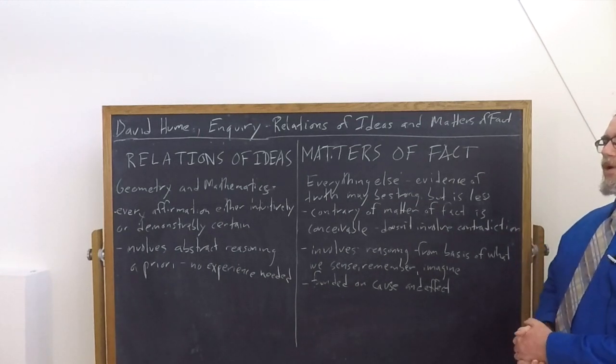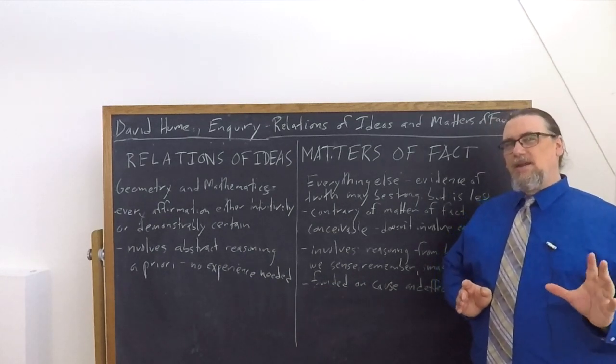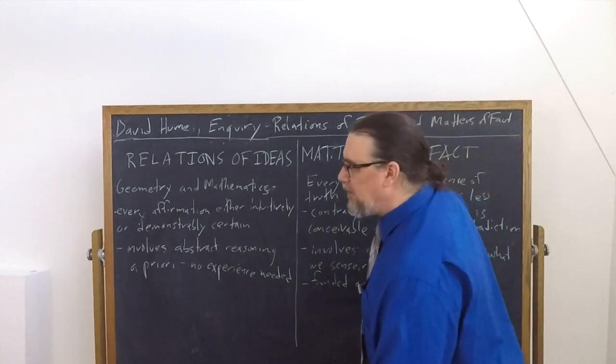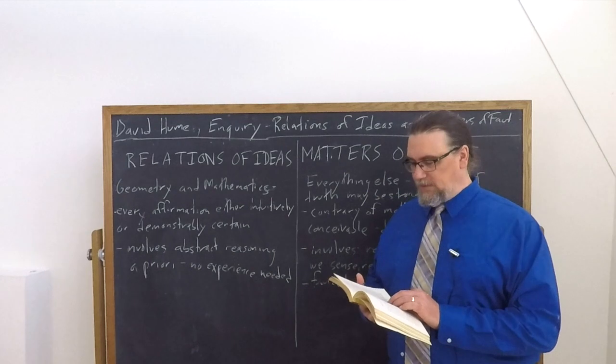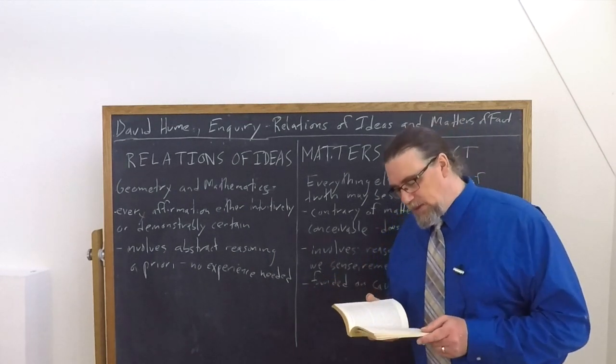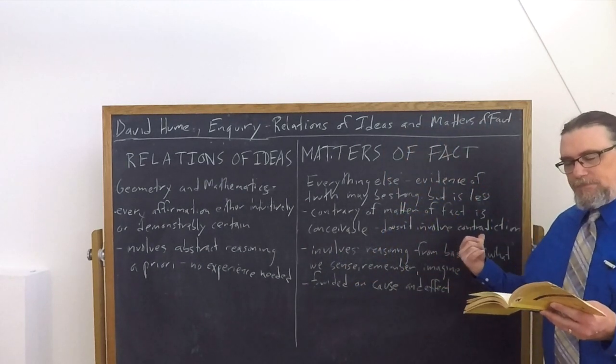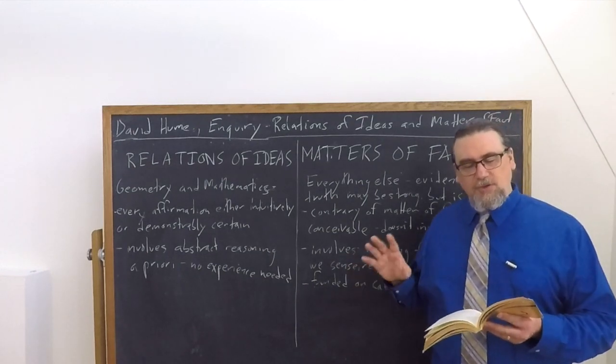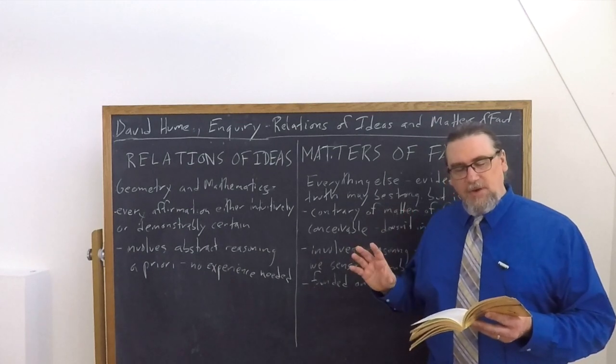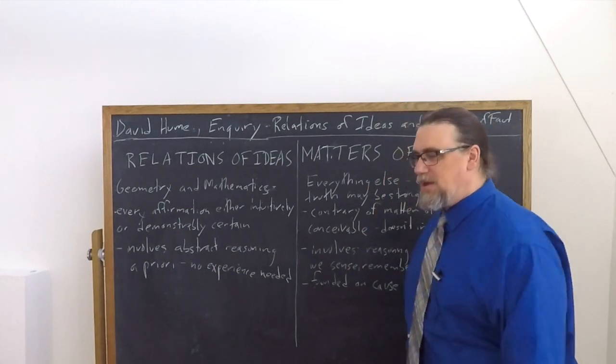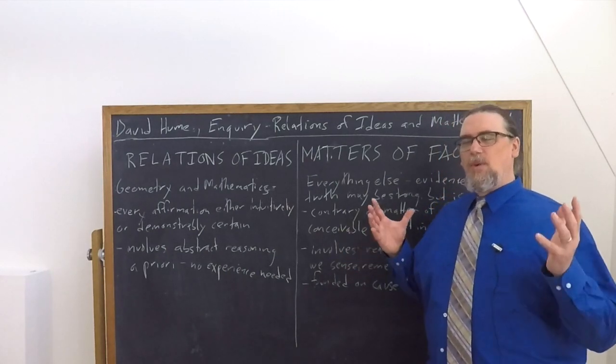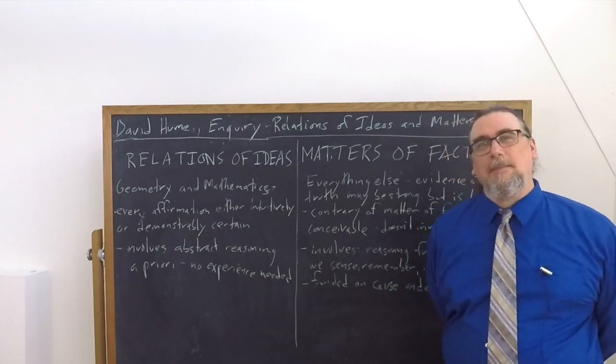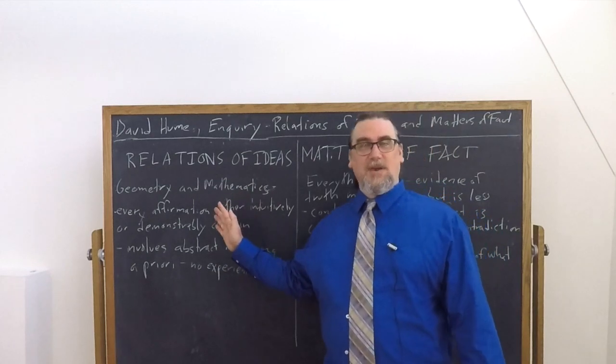Hume makes a couple really interesting and important points here, which, again, he's going to use later on in other works. So the contrary of a matter of fact is conceivable. It's not something that couldn't possibly be the case. He says the contrary of every matter of fact is still possible because it can never imply a contradiction and is conceived by the mind with the same facility and distinctness as, if ever so, conformable to reality. That the sun will not rise tomorrow is no less intelligible a proposition and implies no more contradiction than the affirmation that it will rise, right? We can imagine what it would be like for the sun not to rise. Now, what about people who have a really truncated imagination? Hume isn't going to talk about those here, but that would be a problem, not for him, but for them. They would think all sorts of things are actually relations of ideas that are matters of fact.